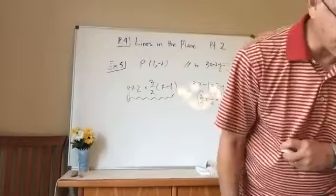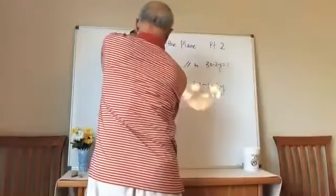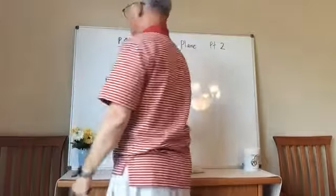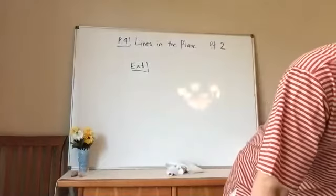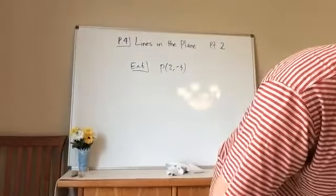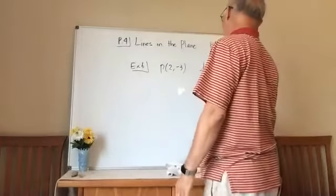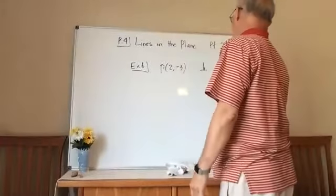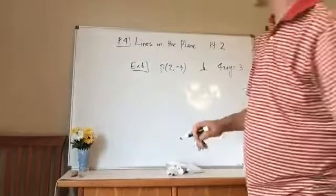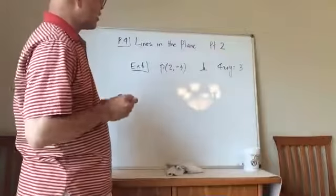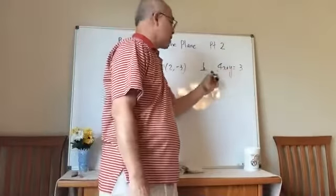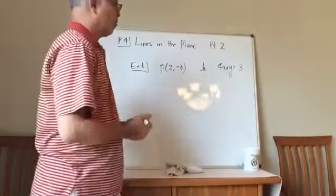Example number six: Find an equation of a perpendicular line. Find an equation with a line that goes through p, so it goes through 2 and negative 3, and it's perpendicular to the line with the equation 4x plus y is equal to 3. So it's the same strategy. I know that goes through this point, and I want to use the point slope form. All I need to do is find the slope.